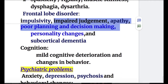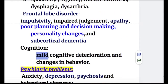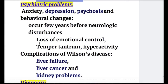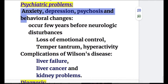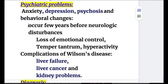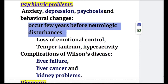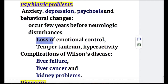Cognitive defects include mild cognitive deterioration. Psychiatric problems in Wilson disease include anxiety, depression, psychosis, and behavioral changes, which occur a few years before neurological disturbances. There is also loss of emotional control, temper tantrums, and hyperactivity.